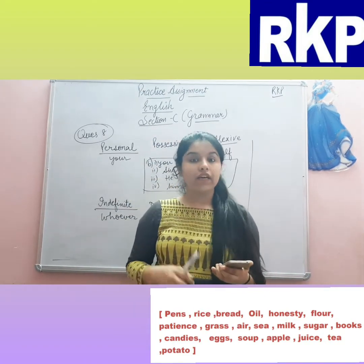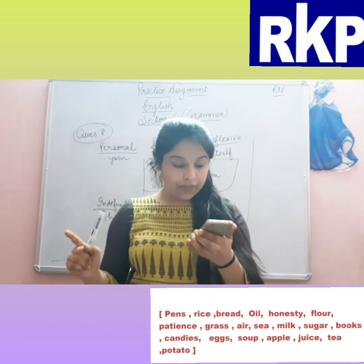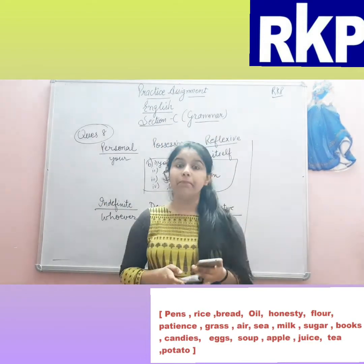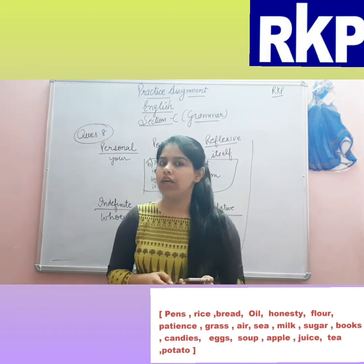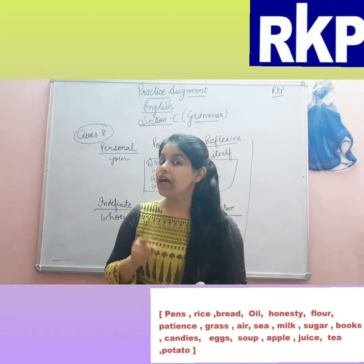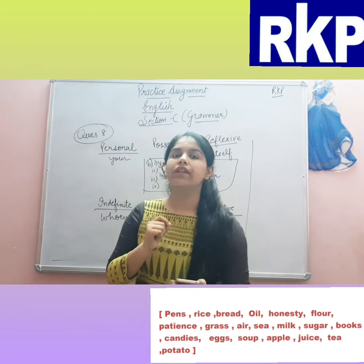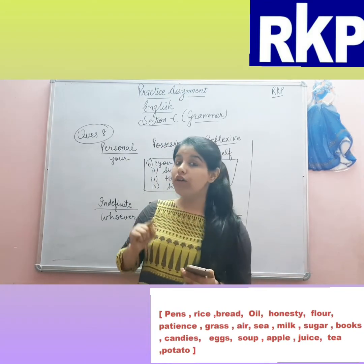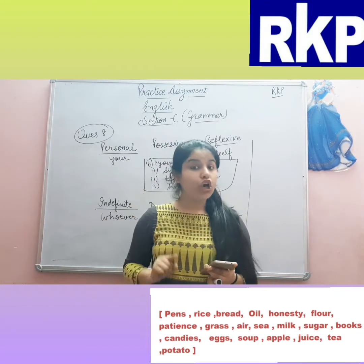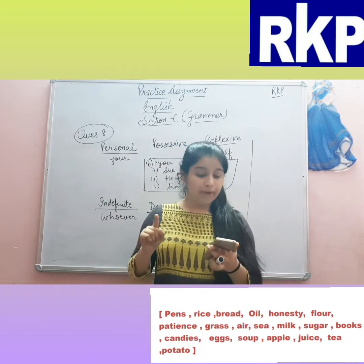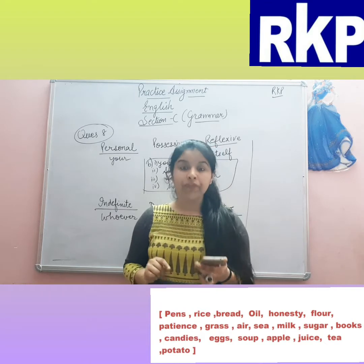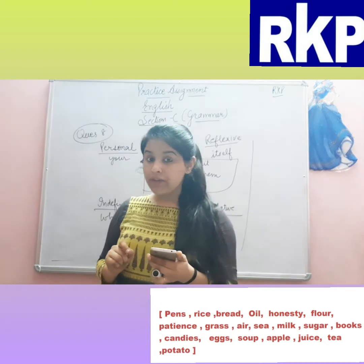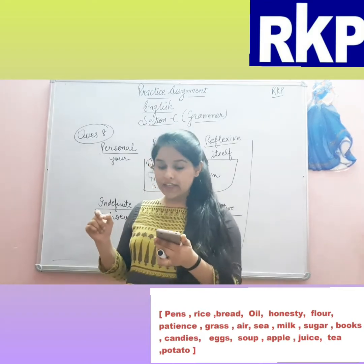Pans — countable. Rice — uncountable. Bread — bread is an uncountable noun. We can count loaves of bread, but we cannot count bread itself. Oil — uncountable, it is a liquid state noun.